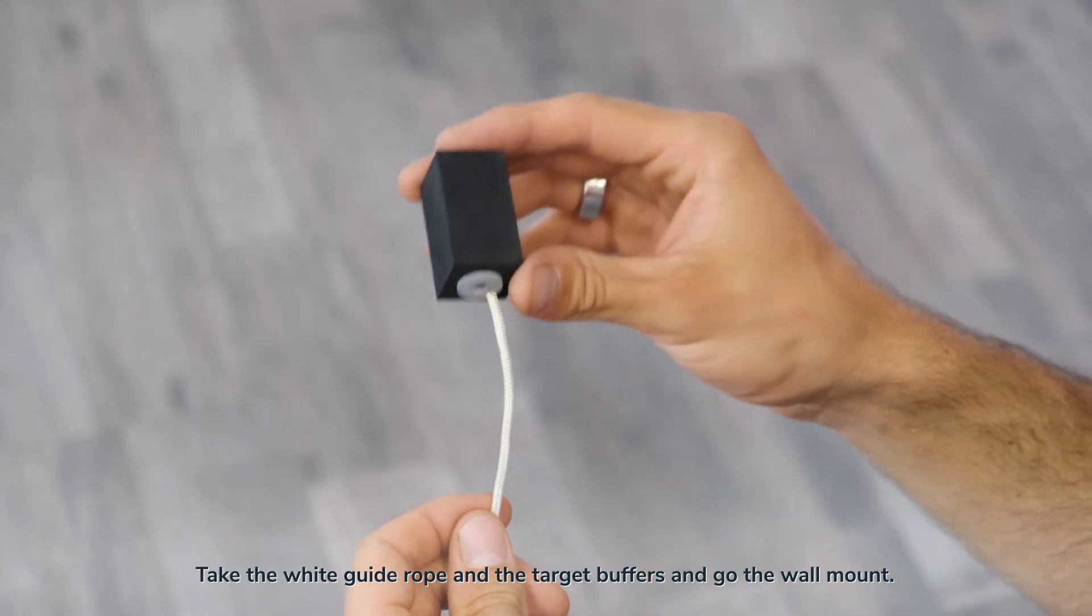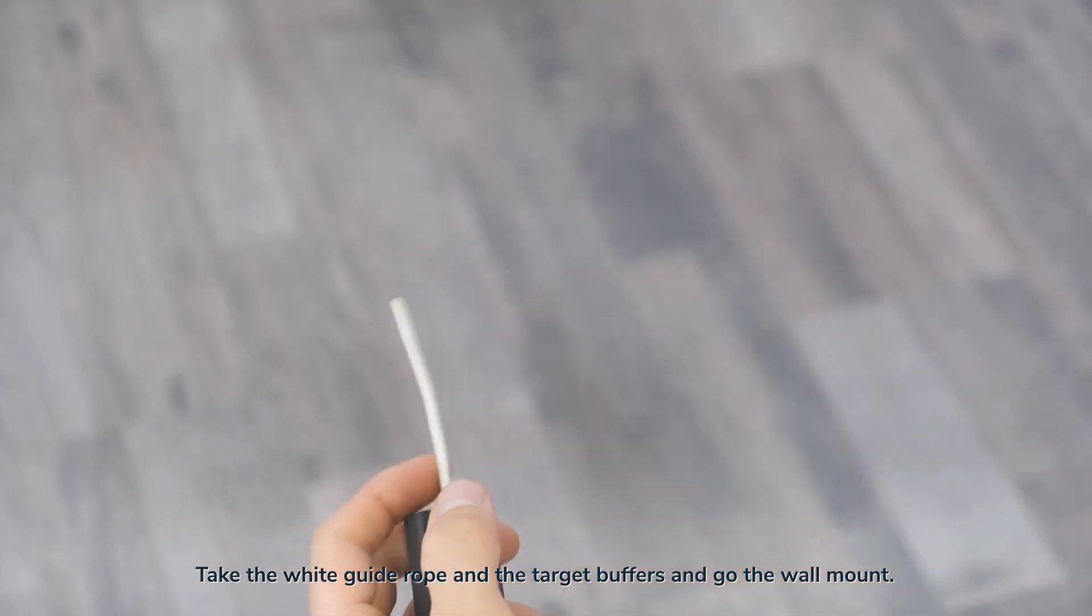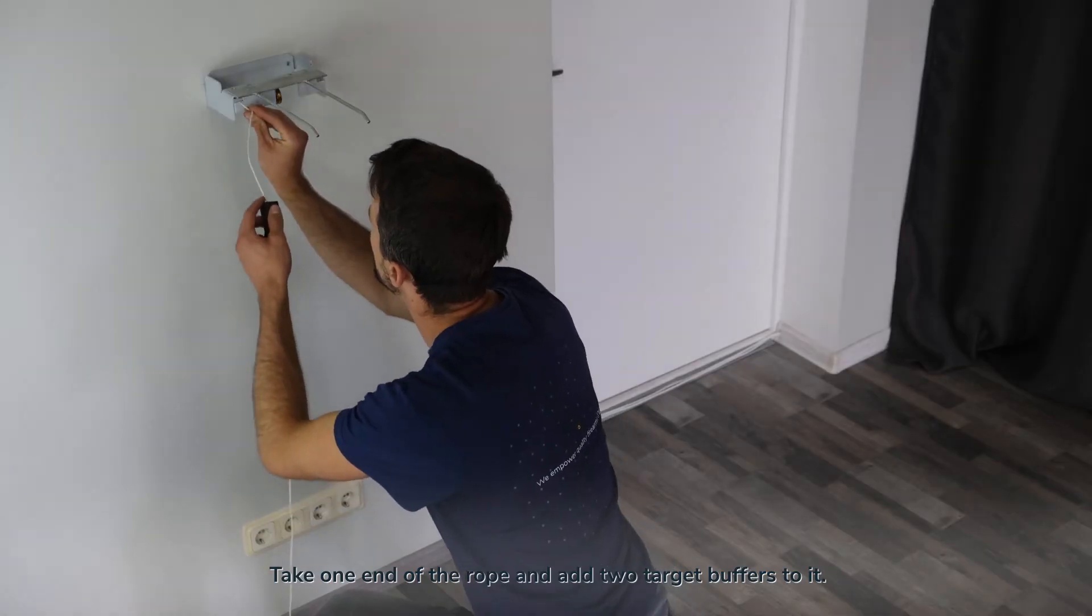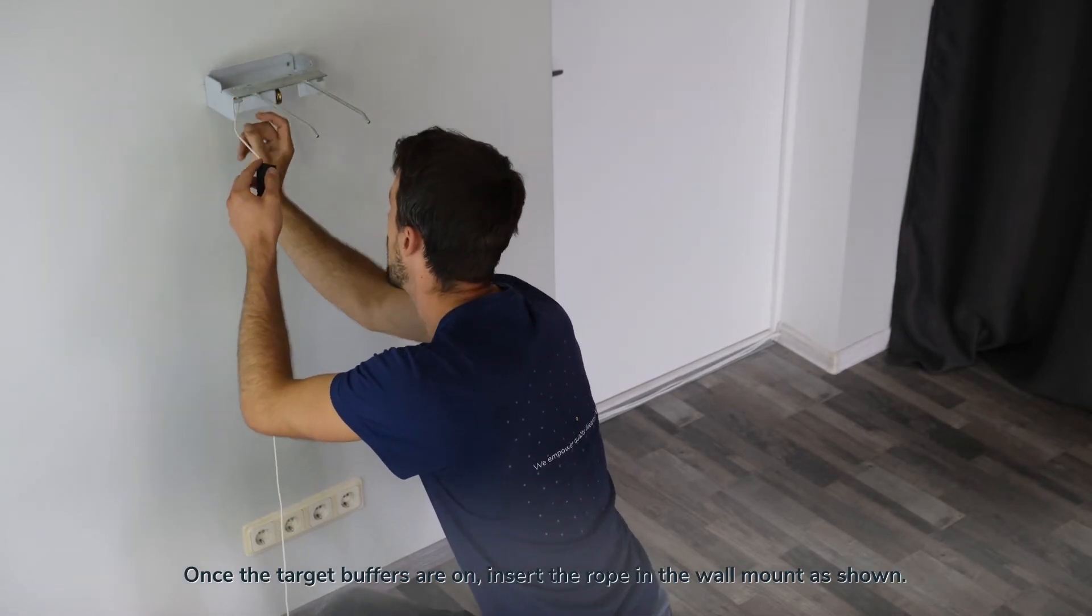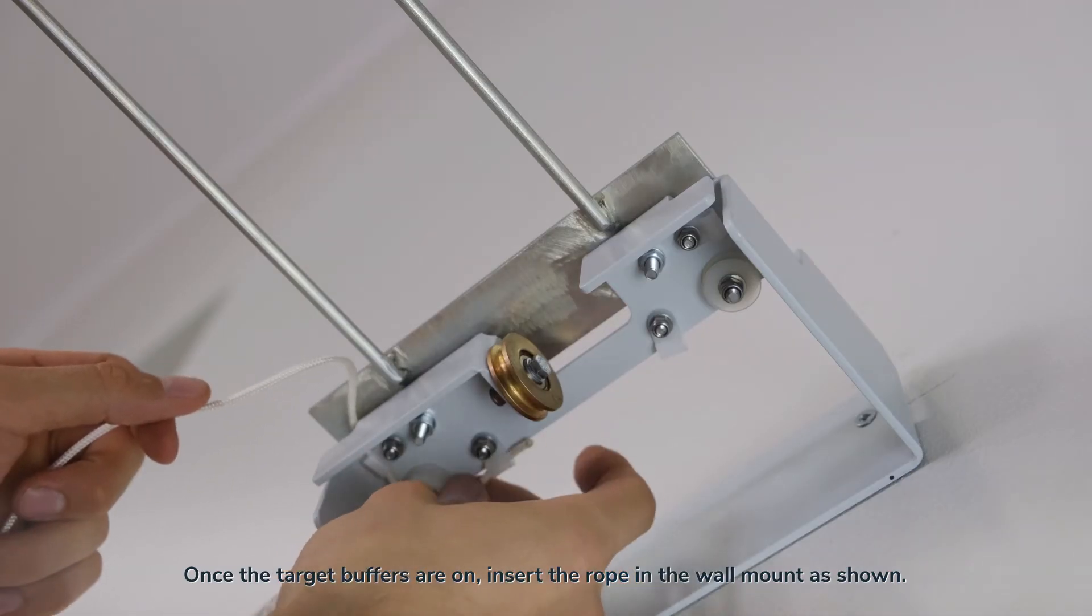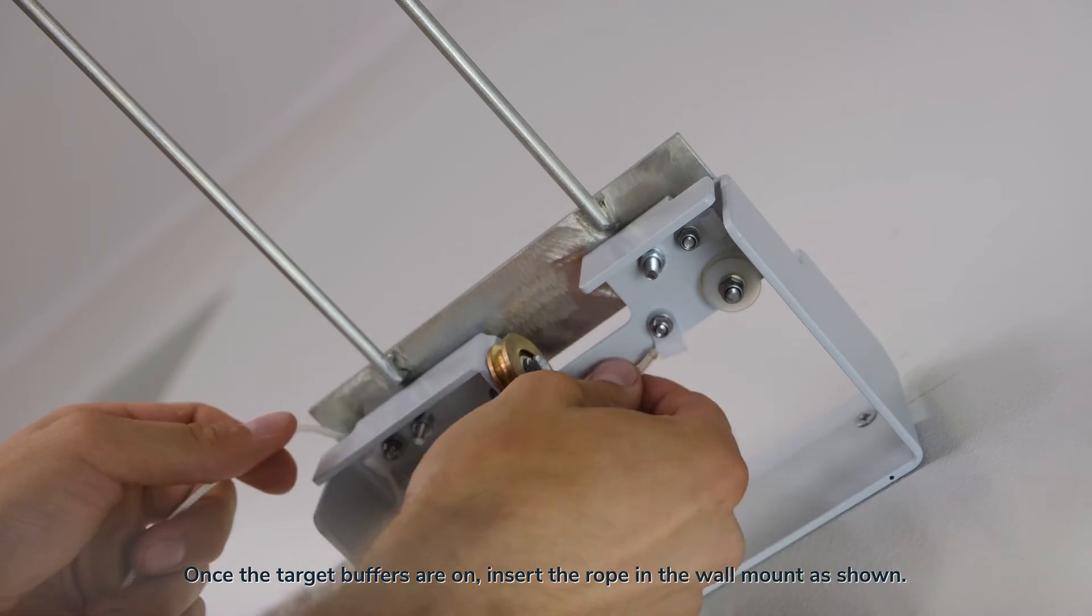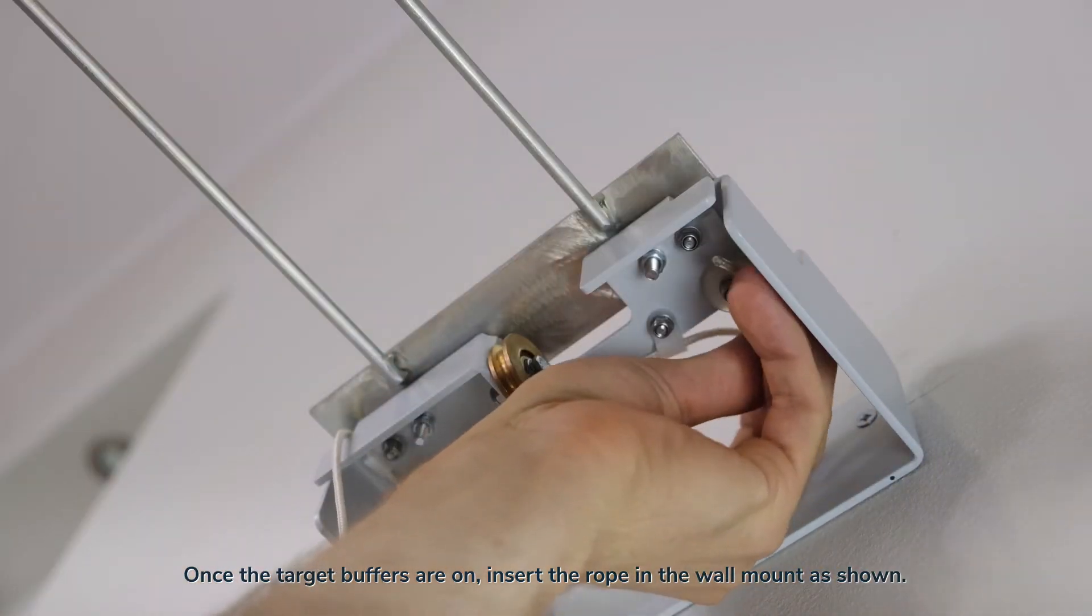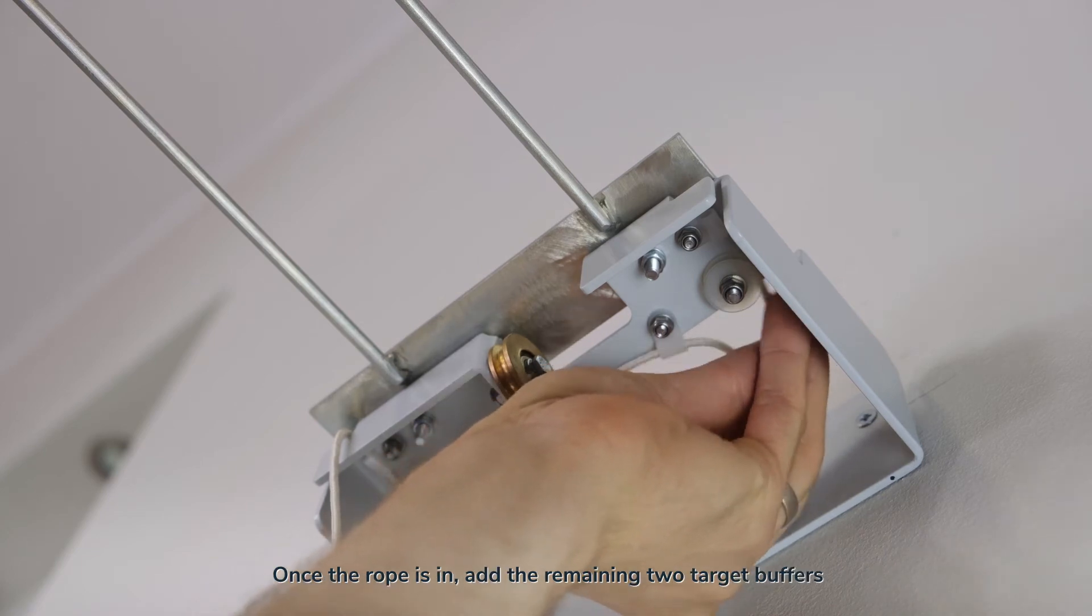Take the white guide rope and target buffers and go to the wall mount. Take one end of the rope and add two target buffers to it. Once the target buffers are on, insert the rope into the wall mount as shown. Once the rope is in, add the remaining two target buffers and pull the ropes to the drive unit.